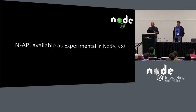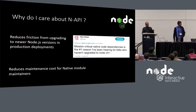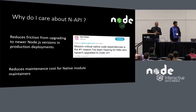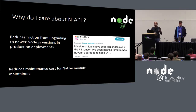NAPI is available as experimental in Node.js 8, which came out earlier this year in May. NAPI-enabled modules will improve the experience for module consumers, reduce friction in production deployments when upgrading to newer versions of Node, and save cost for module maintainers. A tweet from Dan Shaw noted that a mission-critical native code dependency is the number one reason why people are not upgrading to Node.